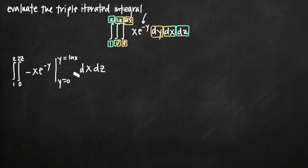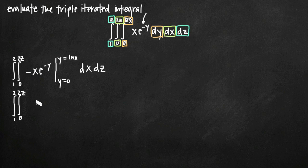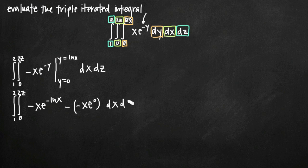Now we plug in the interval from 0 to ln of x. We plug in the upper limit first — natural log of x — to get negative x e to the negative ln of x. Then we subtract what we get when we plug in 0: minus negative x e to the negative 0, which we can call 0. Then we have dx and dz. Now we simplify as much as possible before integrating with respect to x and z.